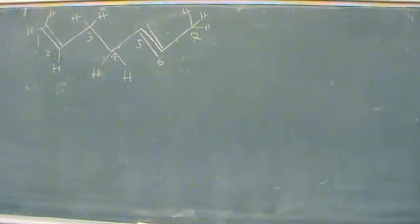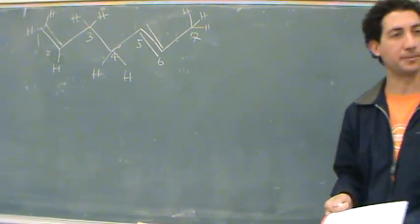And then carbon number seven. What's its hybridization? SP3. Here it says it was SP, so that's not true. So the correct answer is carbon number two is SP2 hybridized. Nice, thank you.